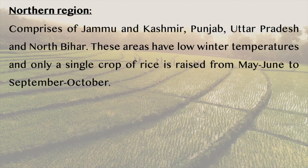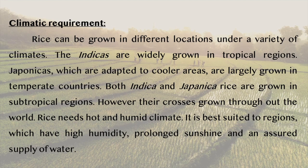The northern region comprises Jammu and Kashmir, Punjab, Uttar Pradesh and North Bihar. These areas have low winter temperatures and only a single crop of rice is raised from May–June to September–October. Rice can be grown in different locations under a variety of climates. Indicas are widely grown in tropical regions. Japonicas, which are adapted to cooler areas, are largely grown in temperate countries. Both Indica and Japonica rice are grown in subtropical regions, and their crosses are grown throughout the world.